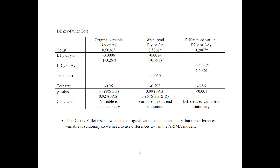The test statistic is basically looking at the coefficient on the lag variable, and here it is minus 0.26. This is the p-value for a significant difference from zero. In Stata and SAS they are very different. Our conclusion is that this is not significantly different from zero, and therefore the variable is not stationary. When you have a non-significant coefficient, the variable is not stationary — therefore we need to difference it.